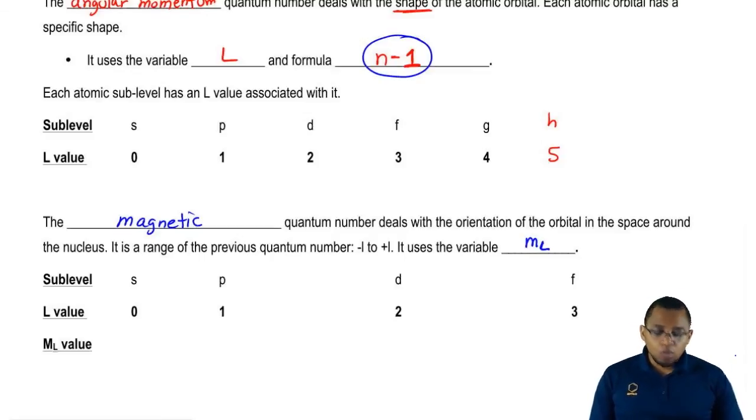If we know what the sublevel letter is, then we know what the L value is. The magnetic quantum number, m sub L, is just the range of our L. What does that mean?